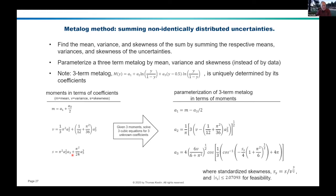The overall method is to find the mean, variance, and skewness of the sum by summing the respective means, variances, and skewnesses of the uncertainties, whatever uncertainties you're trying to sum. This is not a new theorem — it's a long, well-known aspect of the statistics of probability distributions: the mean, variance, and skewness of the sum is the sum of the respective means, variances, and skewnesses if those uncertainties are independent. If they're not independent, I'll show you the extension in just a moment.